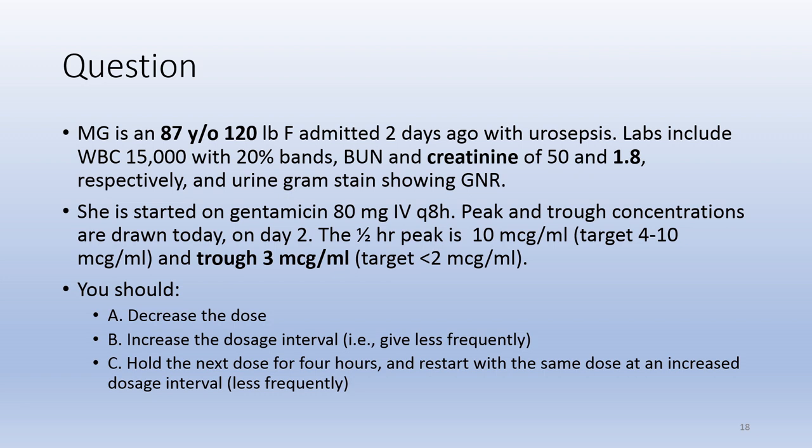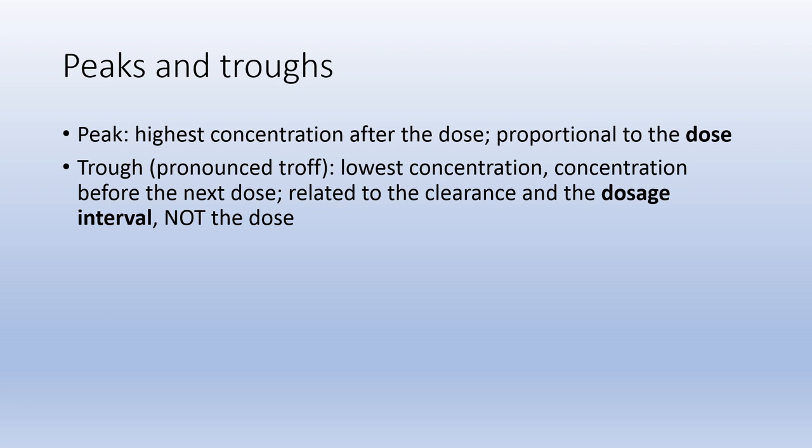The question is: should you A) decrease the dose, B) increase the dosage interval — in other words, give it less frequently — or C) hold the next dose for four hours and restart with the same dose at an increased dosage interval? To define our terms: the peak is the highest concentration after the short infusion, and it's proportional to the dose. The trough is the lowest concentration, or the concentration before the next dose, and it's related to the clearance and the dosage interval, but not the dose. This is a key and commonly misunderstood piece of information.